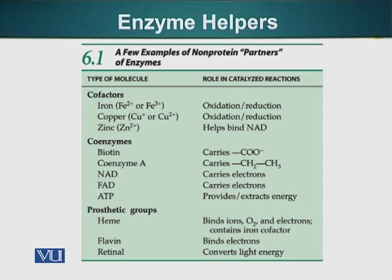Cofactors. Examples of cofactors are iron, which facilitates oxidation-reduction reactions when it is attached to an enzyme. Copper also facilitates oxidation and reduction reactions. Zinc helps a type of enzyme protein. NAD is also an example.